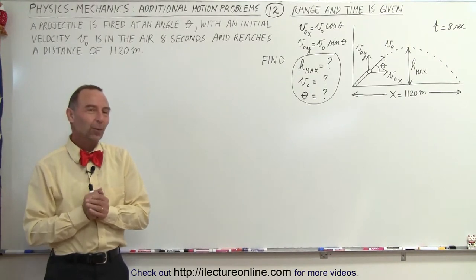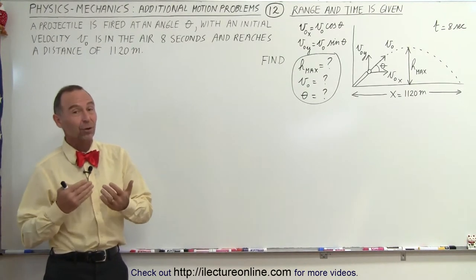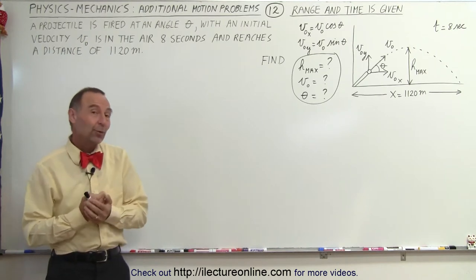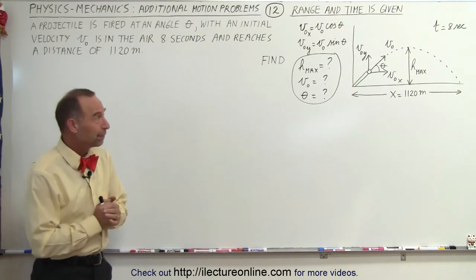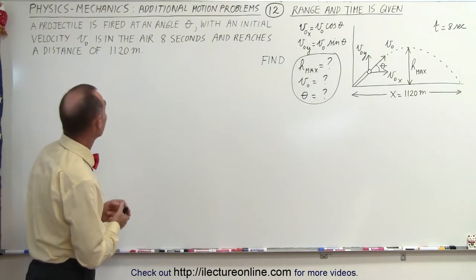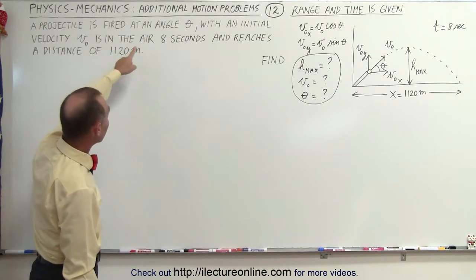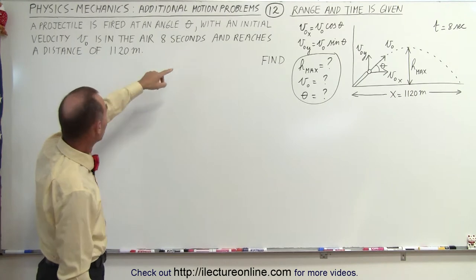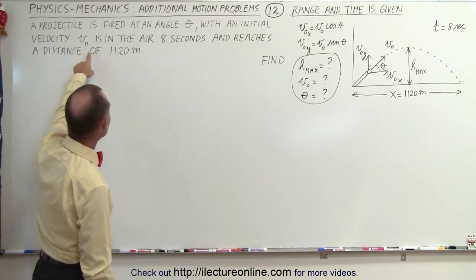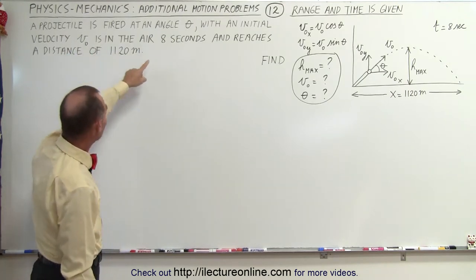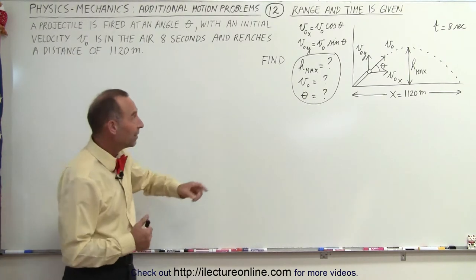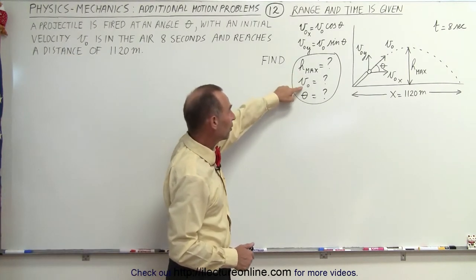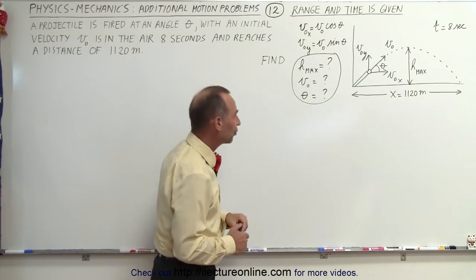Welcome to ElectronLine. Once in a while a viewer will ask a question, and this particular question was pretty interesting, so we thought let's make a video on it. A projectile is fired at an angle that's unknown with an initial velocity that's unknown, but it's in the air for eight seconds and reaches a distance of 1120 meters. Find the maximum height reached, the initial velocity, and the angle at which it was fired.